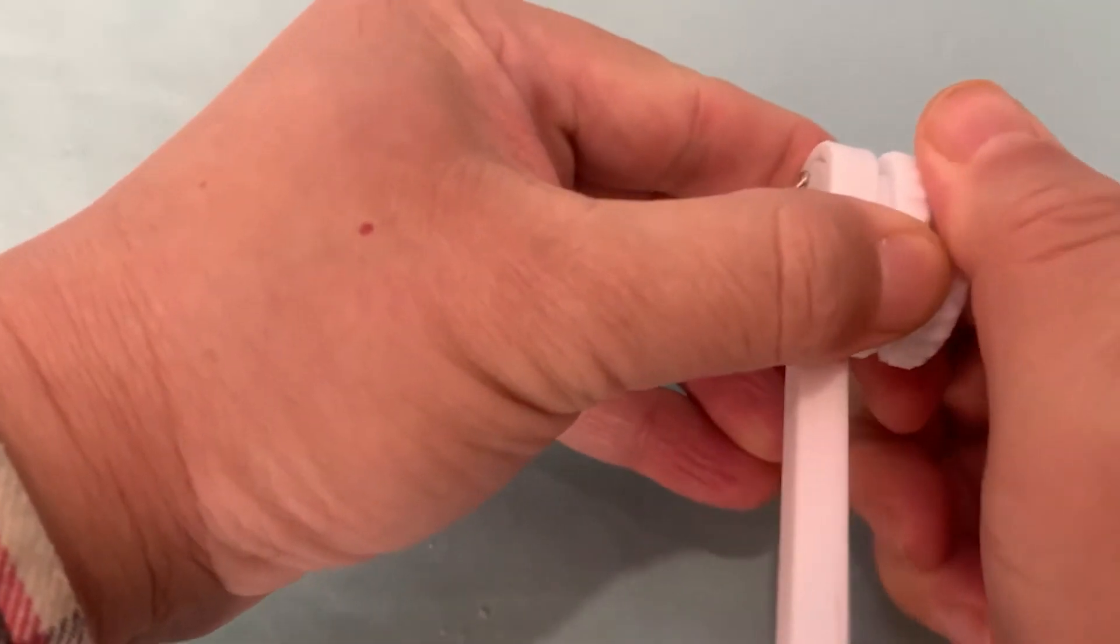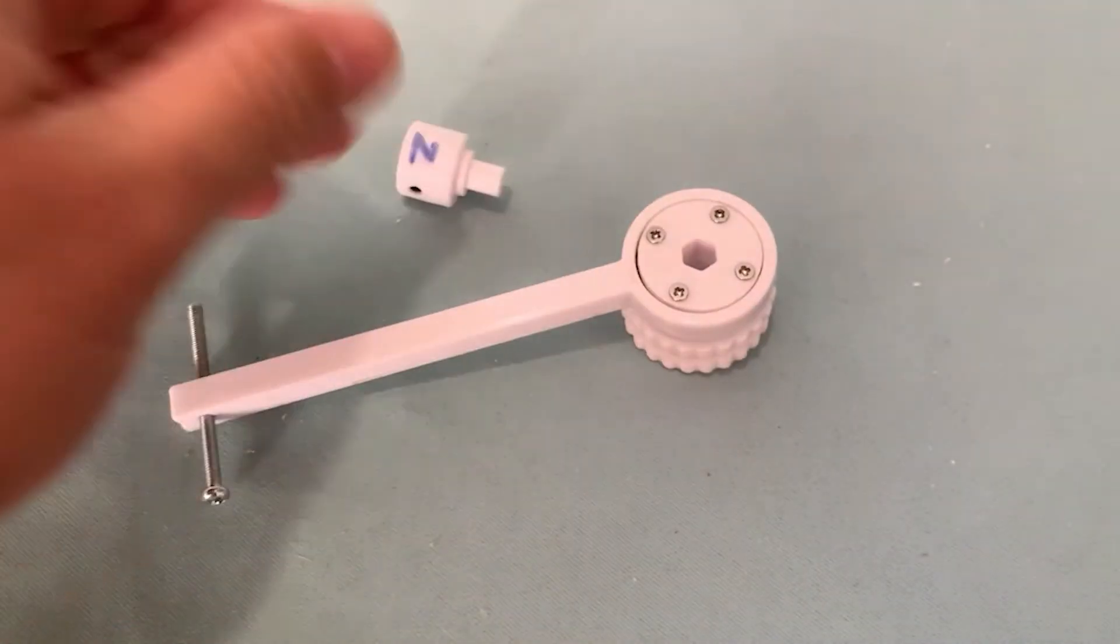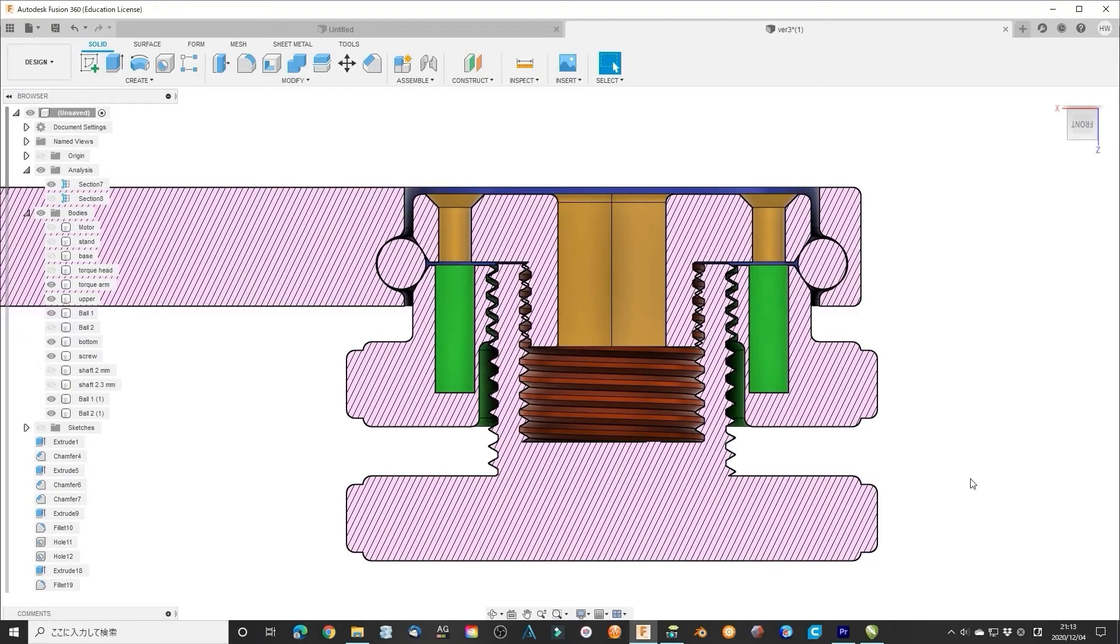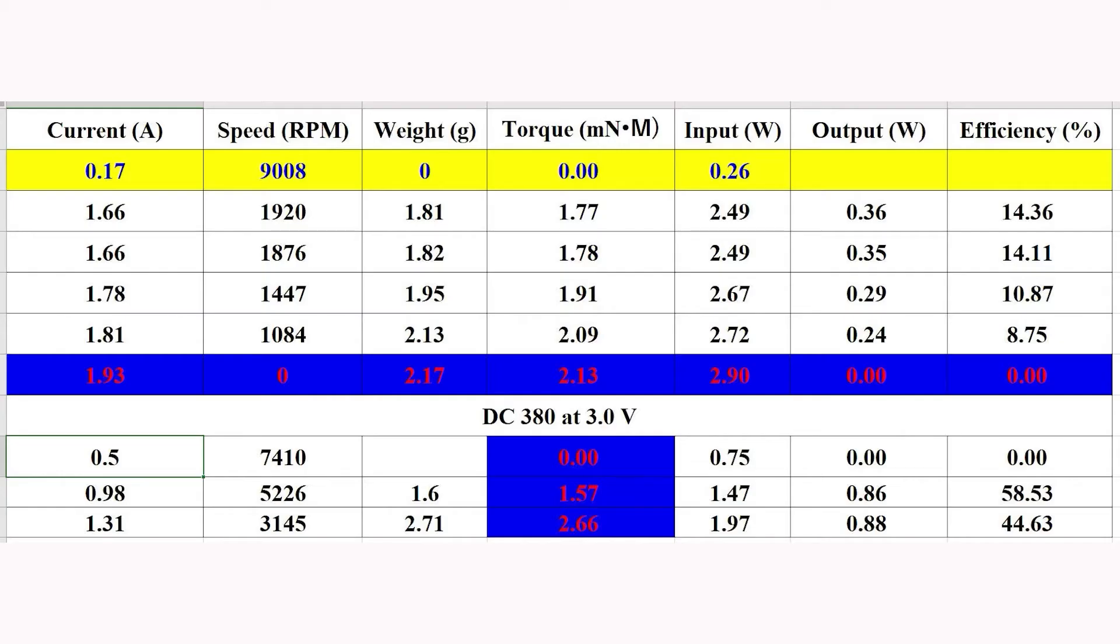Rotate the screw clockwise, the space of the upper and bottom becomes small. It means the friction force will increase. The speed changed to 5226 rpm, and the weight is 1.6 g, where the torque is 1.57 mNm.